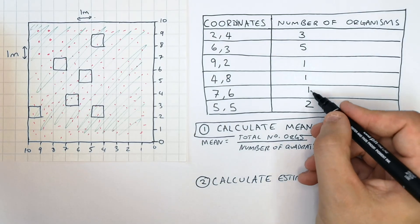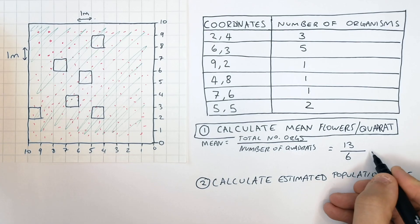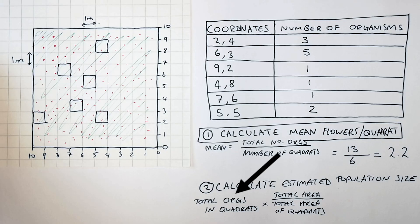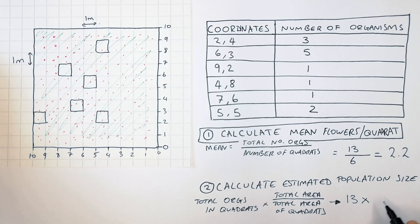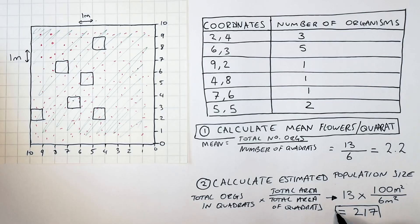The total number of organisms in all of your quadrats is 13. Divide that by the number of quadrats, which is 6, giving an answer of 2.2 flowers per quadrat. Then use the equation: total organisms in the quadrats times by total area divided by total area of the quadrats. The quadrats are 1 by 1 meter, so: 13 times by 100 meters squared (10 by 10 meters, the total area of the field), divided by 6 meters squared (total area of the quadrats), gives an estimated population size of 217 flowers.